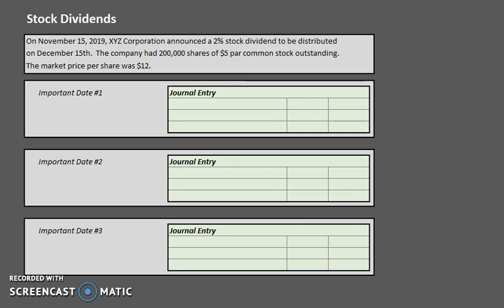Let's take a look at the problem we have here. On November 15th, 2019, XYZ Corporation announced a 2% stock dividend to be distributed on December 15th. The company had 200,000 shares of $5 par common stock outstanding, and the market price per share was $12.